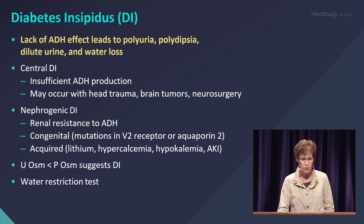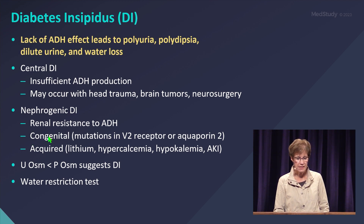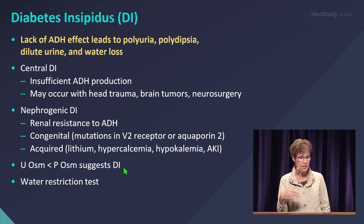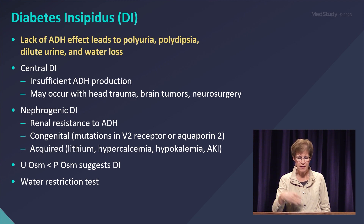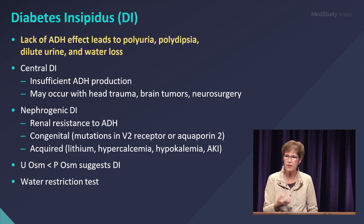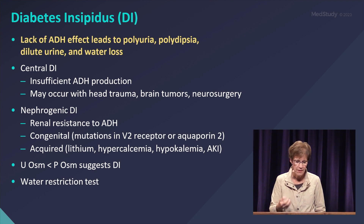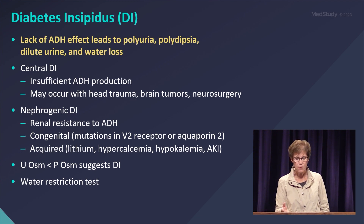The one we're usually wondering about is congenital nephrogenic DI. In this case, your urine osmolarity is lower than your plasma osmolarity. Your plasma osmolarity is high, and you'd think urine osm would be high from ADH trying to fix that. If it can't do that, then you think about diabetes insipidus.